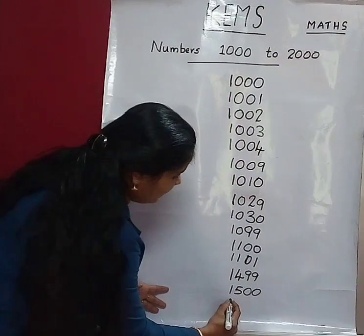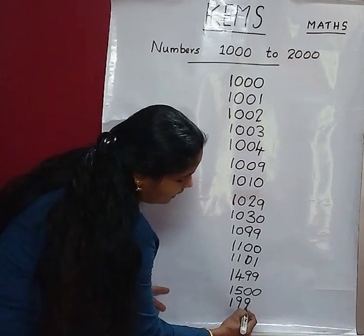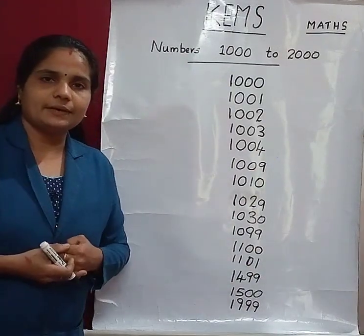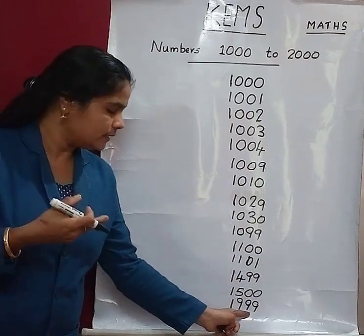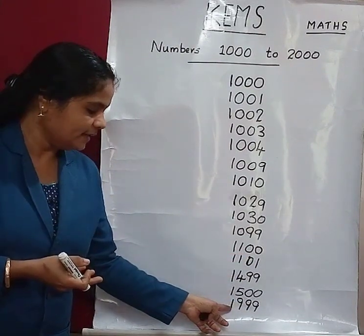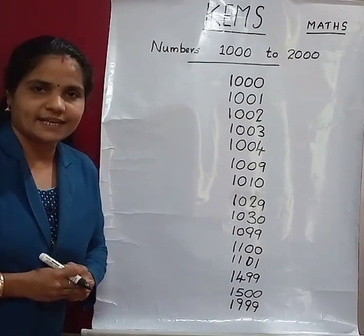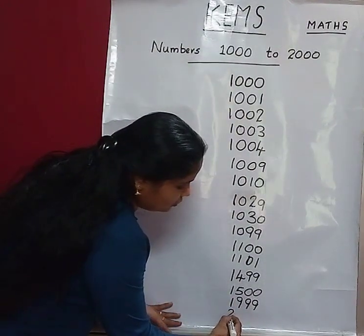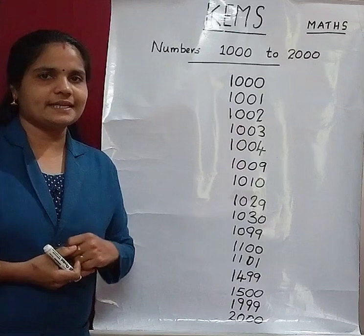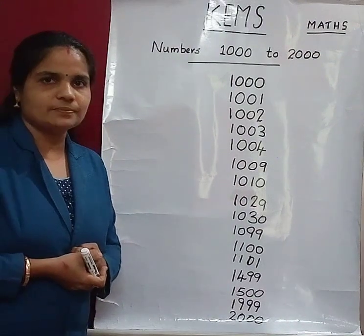Then, after 1999, the next number is 2000. After 999 comes 1000, so 1999 is followed by 2000. It's very easy to understand — you just write on your book also.